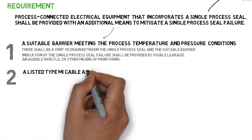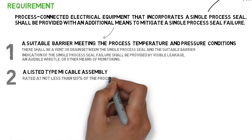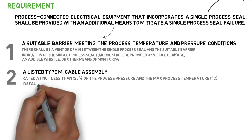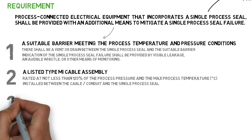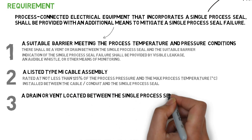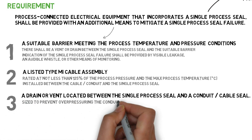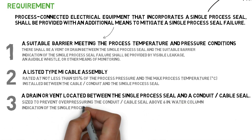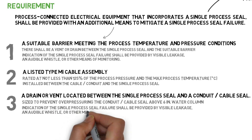Another additional means is a listed type MI cable assembly rated at not less than 125 percent of the process pressure and the maximum process temperature in degrees Celsius, installed between the cable or conduit and the single process seal. A drain or vent located between the single process seal and a conduit or cable seal, sized to prevent over-pressuring the conduit or cable seal above six inches of water column, shall also provide indication of single process seal failure by visible leakage, an audible whistle, or other means of monitoring.